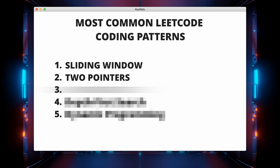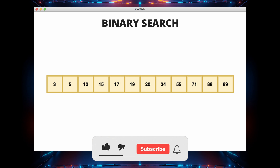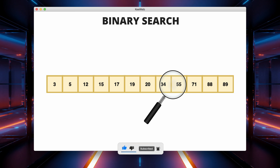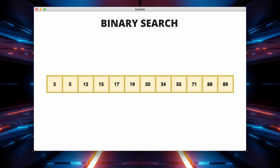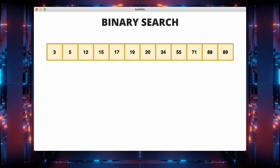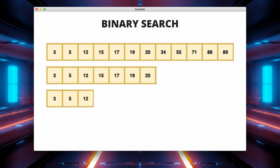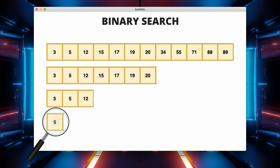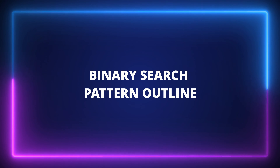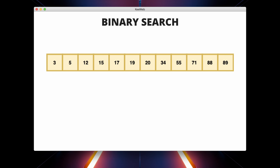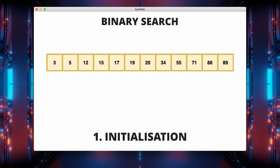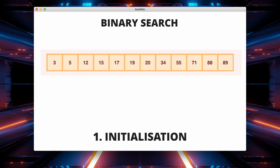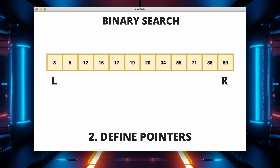The next pattern on our list is binary search. The binary search pattern is a technique commonly used to efficiently search for a specific value in a sorted array or perform similar tasks in ordered data structures. Binary search operates by repeatedly dividing the search space in half, discarding the half that is known not to contain the target value, until the target is found or the search space is empty. Here is a general outline: first, initialization — set the initial search space, typically the entire array. Next, define pointers — maintain two pointers, usually denoted as left and right, to represent the current search space.